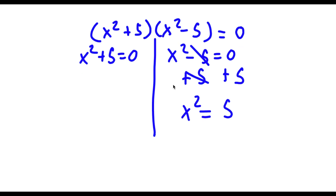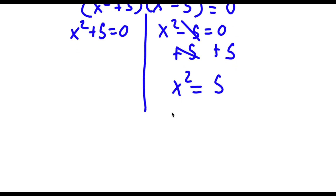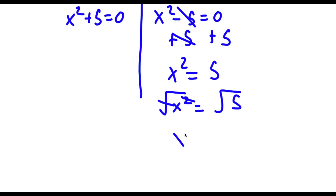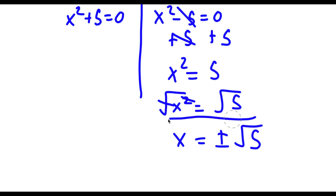Now I'm going to take the square root on both sides. So I have the square root of x squared is equal to the square root of 5. The square root of x squared is simply equal to x, and this is actually going to be positive or negative square root of 5. So these are two solutions of x.